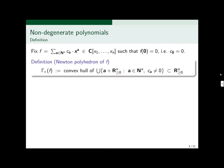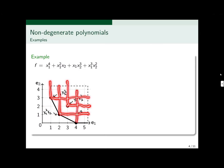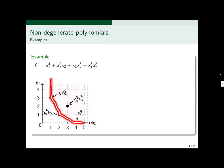Let me use an example to explain this definition. Consider this polynomial in two variables. As you can see, I've drawn the Newton polyhedron below. Here is how it goes: this point is x1 to the power of four; this point is x1 squared x2; this point is x1 x2 cubed; and finally, this point is x1 cubed x2 squared. These are precisely all the monomials appearing in F. What I do is add an upper half space to each point. This is the union of all these upper half spaces. Finally, I'll take the convex hull of this region, and what I end up with is precisely this non-compact polyhedron — the Newton polyhedron of F.